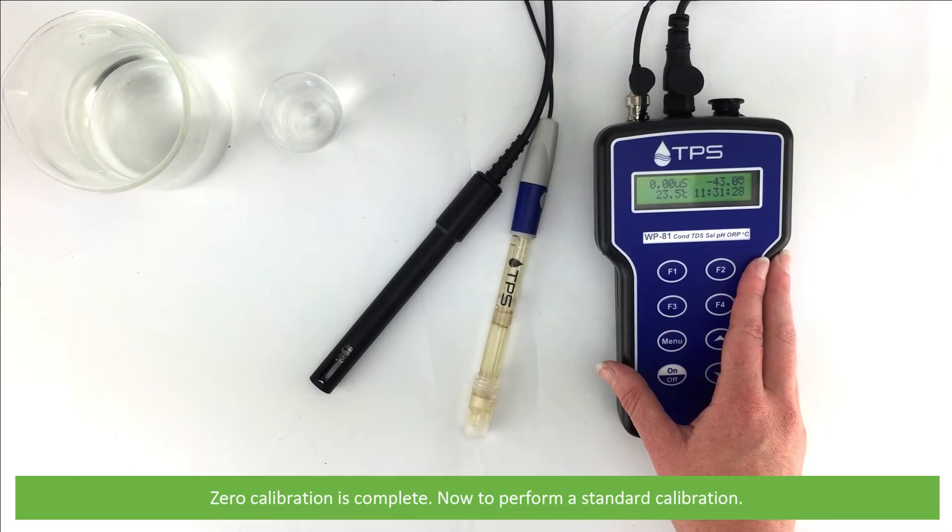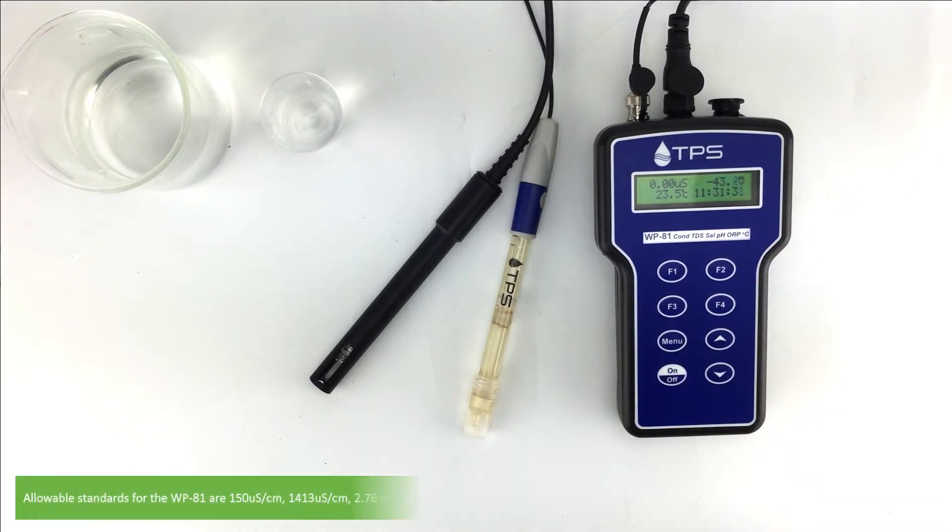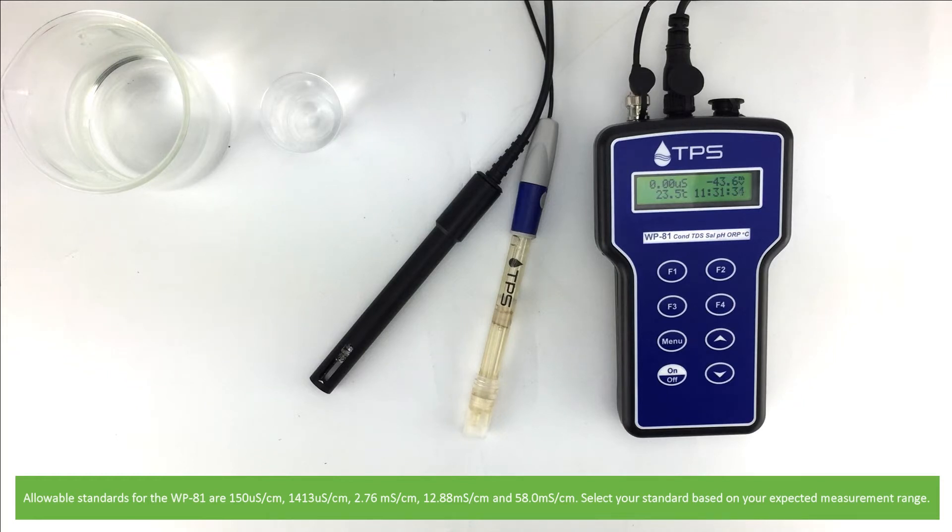Now to perform a standard calibration. Allowable standards for the WP81 are 150 or 1413 microsiemens per centimeter and 2.76, 12.88, and 58 millisiemens per centimeter. Select your standard based on your expected measurement range.